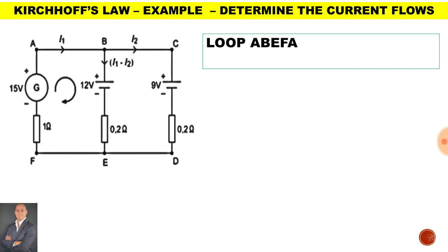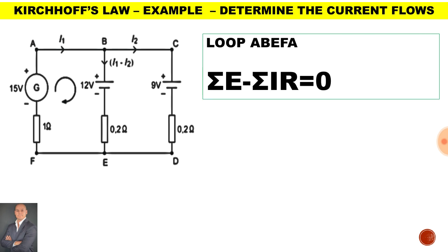This brings us to our first example of Kirchhoff's law, looking at the value of the current in the circuit. The unknown values are I1, I2, and I1 minus I2. We'll take a look at loop A, B, E, F and A first. Here we have a generator with an EMF of 15 volts and an internal resistance of 1 ohm supplying voltage to two batteries. The first battery has an EMF of 12 volts and an internal resistance of 0.2 ohms. The second battery has an EMF of 9 volts and an internal resistance of 0.2 ohms. The applied voltage minus the sum of the volt drops is equal to zero.